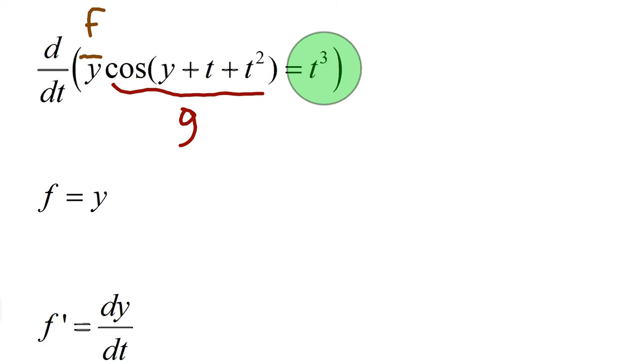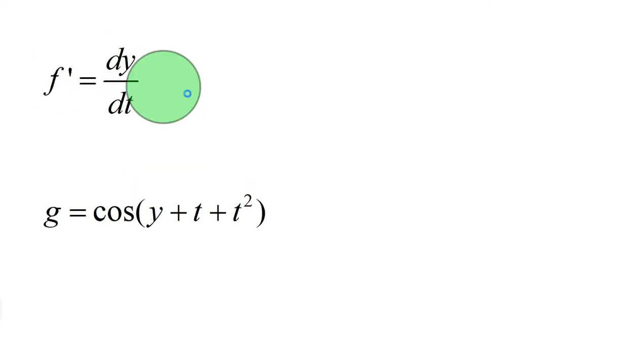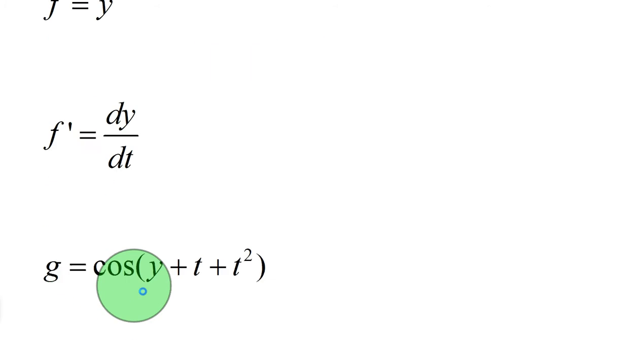Over here on the right, since it's d dt, it's just going to be 3t squared. Nothing major there. So to figure out product rule, we'll have to figure out f prime first. Well, if f is y and we take d dt of that, it will just be dy dt. In fact, it'd be 1 times dy dt, which is just dy dt.